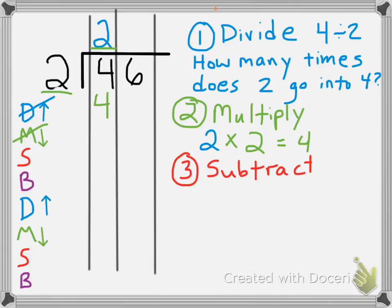Step 3 is subtract. So we're going to do 4 minus 4, which is 0. And my answer goes down there, and I cross out my S in my DMSB's.